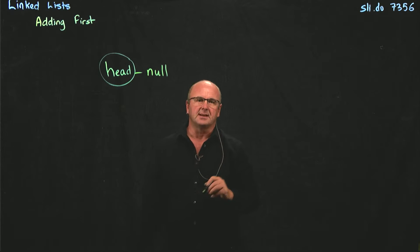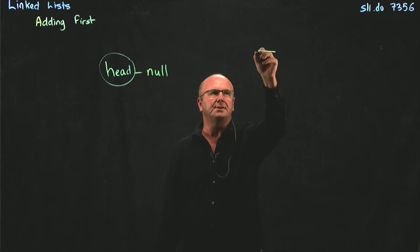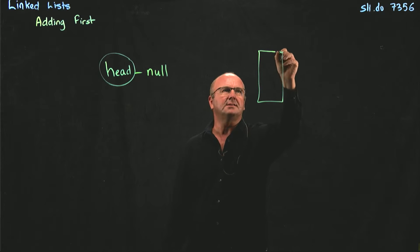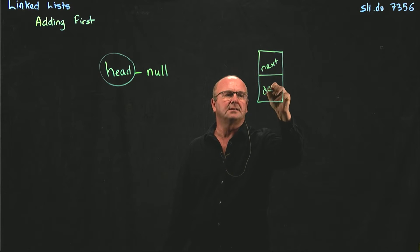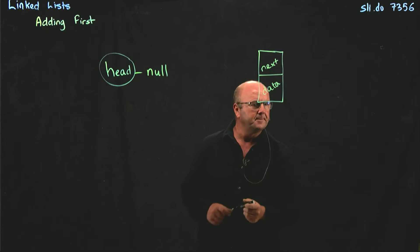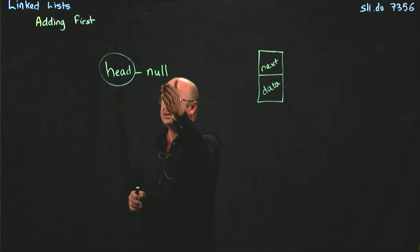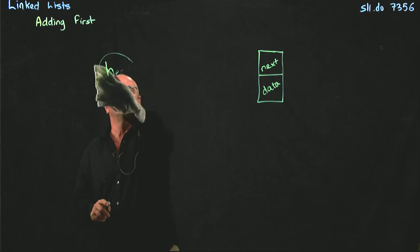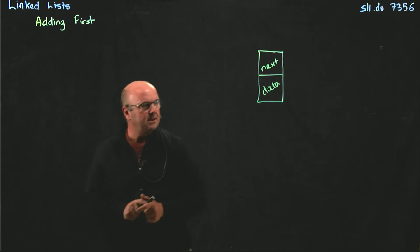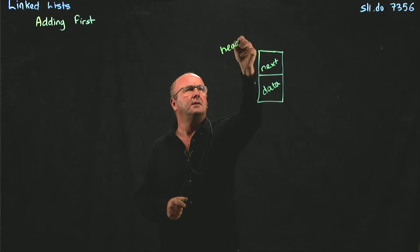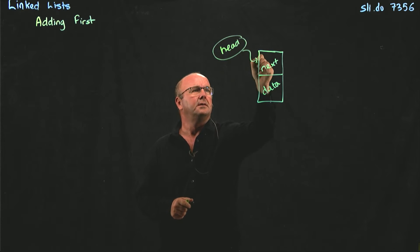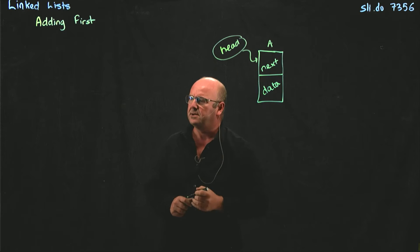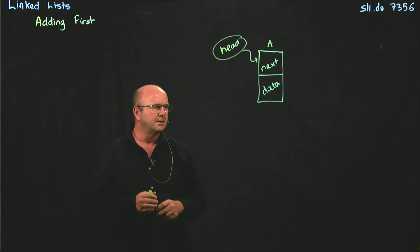So we want to add something to the linked list, and so we create one of these node classes, and our node class has next and it has data. So when we have an empty linked list, all we have to do is take head, point it to our new node, and we're done.